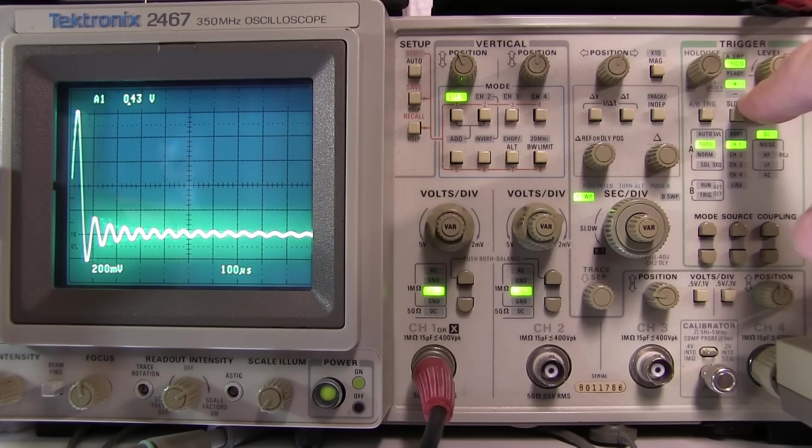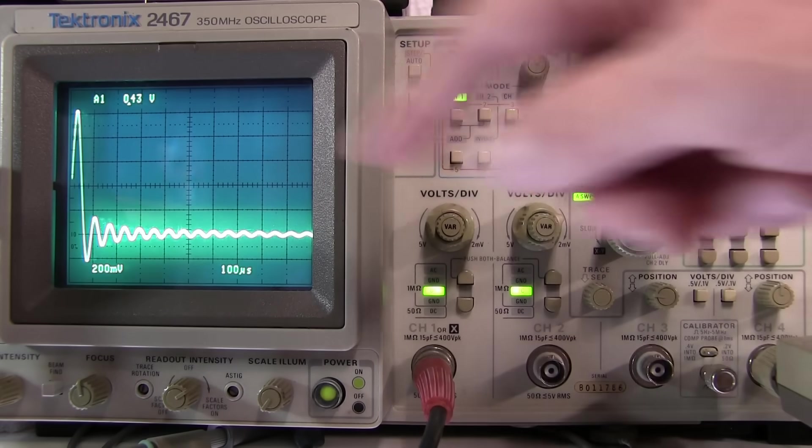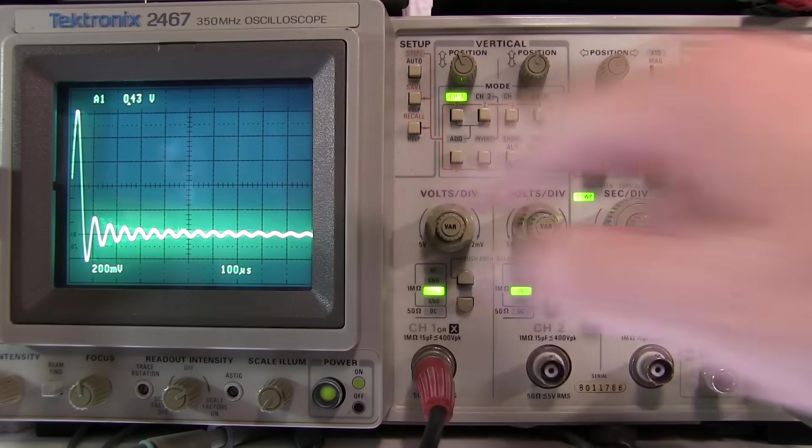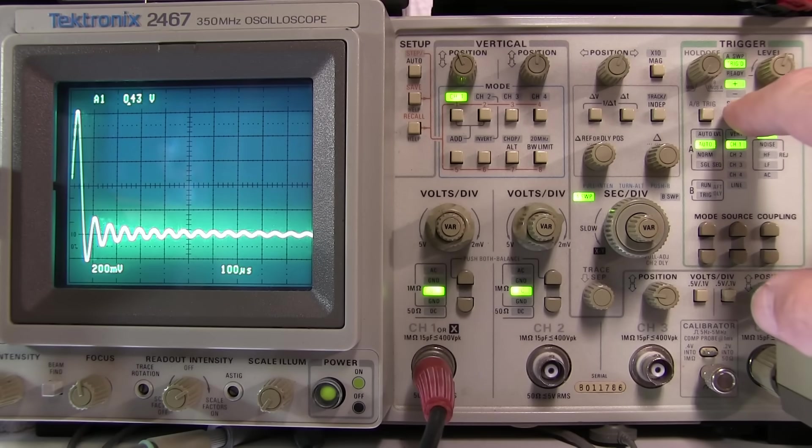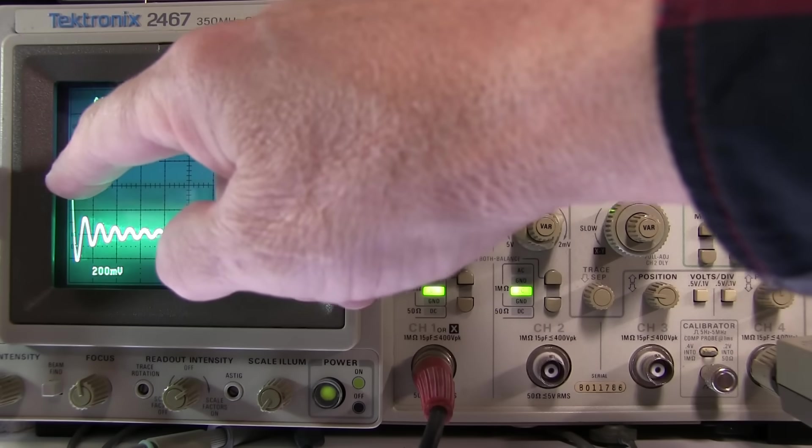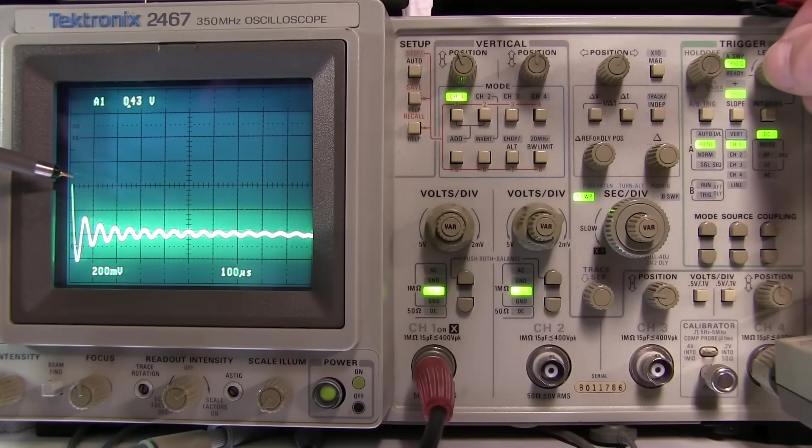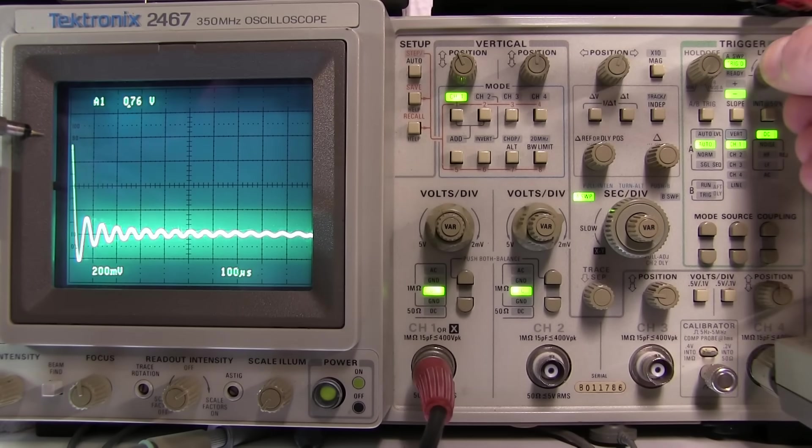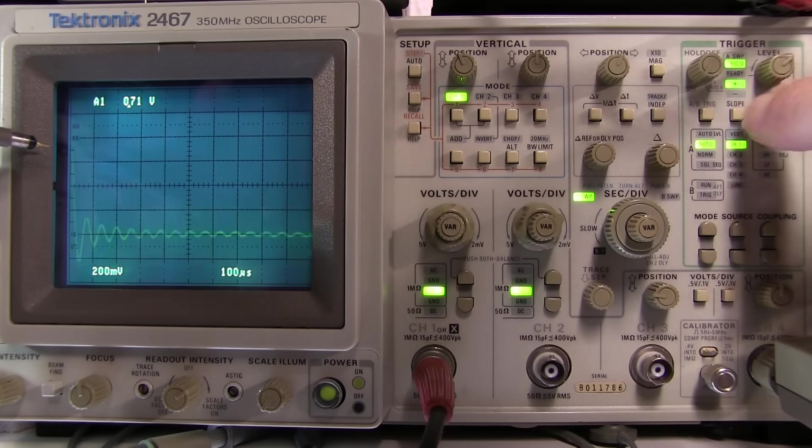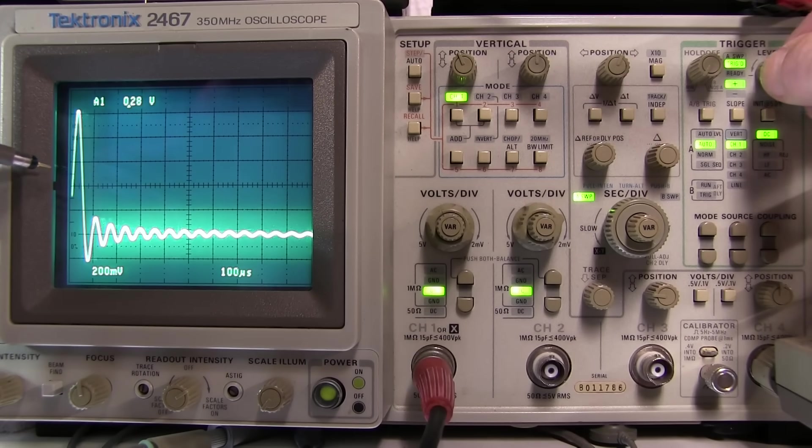Now if I change the slope to negative I'm going to trigger when the signal falls through that threshold. So you'll notice as soon as I switch the slope from positive to negative, now I'm triggering on that falling edge of that waveform. And again if I adjust my level up or down we can see I'm just catching the falling edge of that waveform. I switch it back to positive again, now I'm on that positive edge of that waveform.